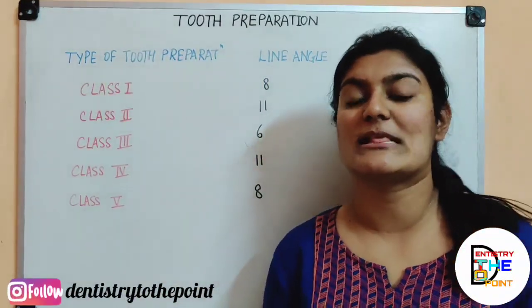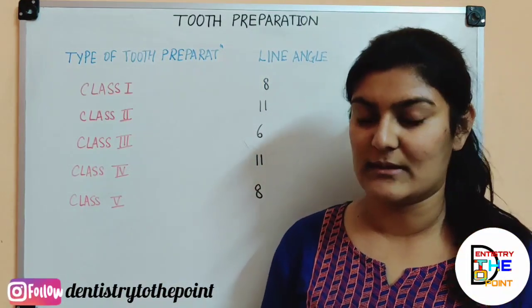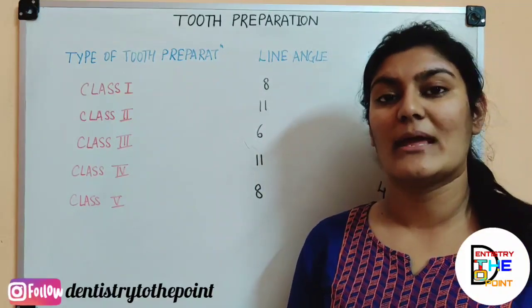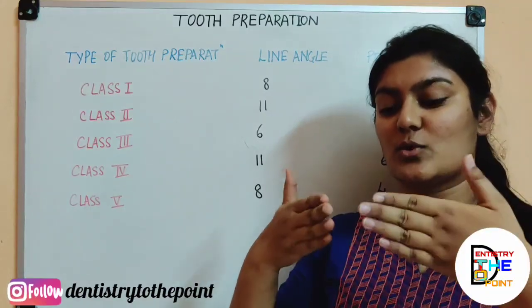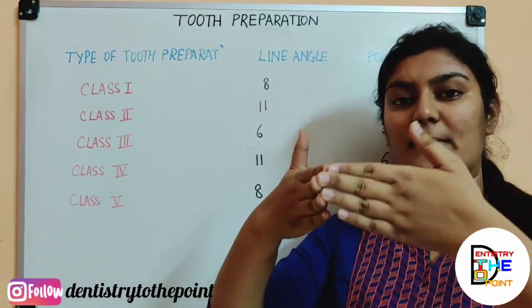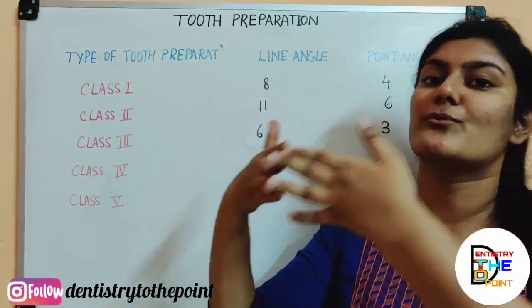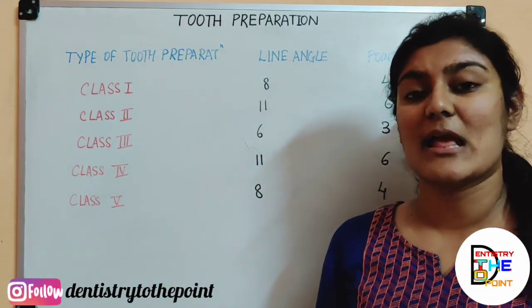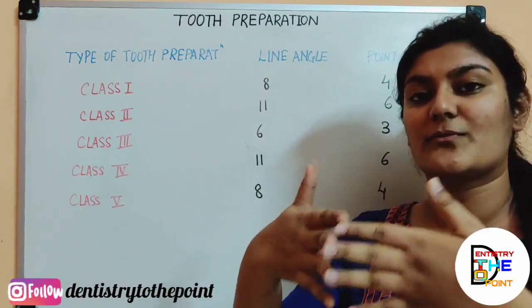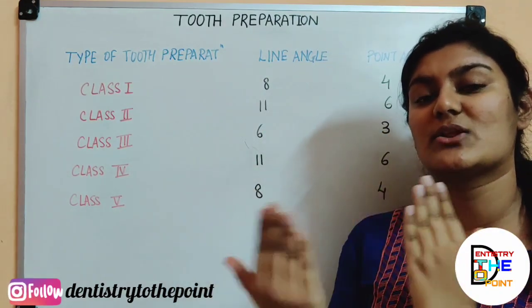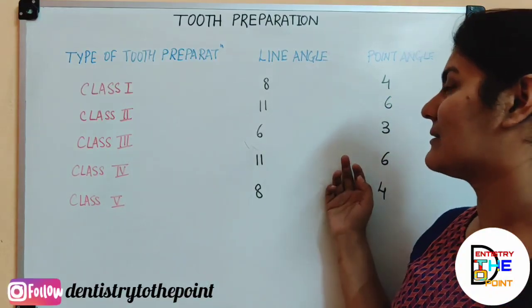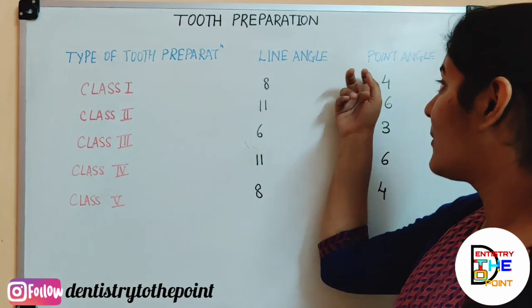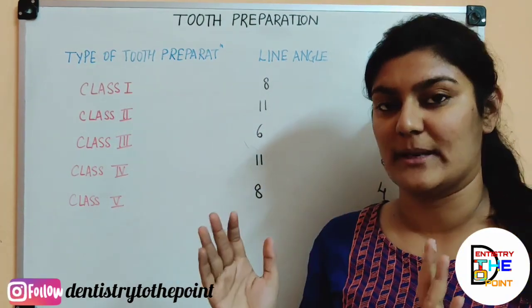Now we discuss what is a line angle and what is a point angle. A line angle is formed where two surfaces of different orientation meet. A point angle is formed where three surfaces of different orientation meet. So: line angle — two surfaces of different orientation meet; point angle — three surfaces of different orientation meet.